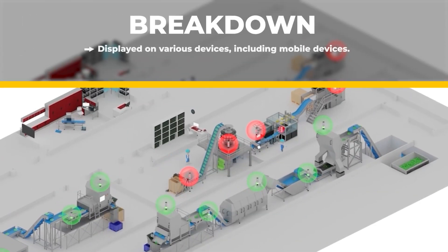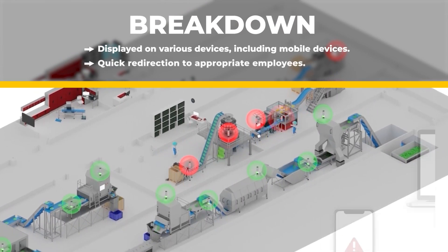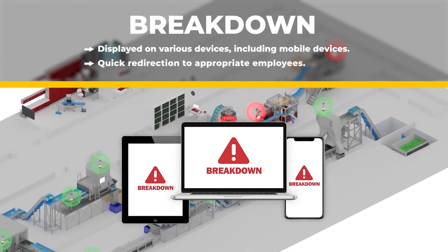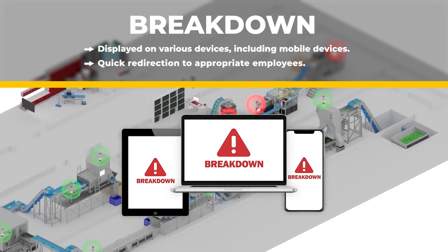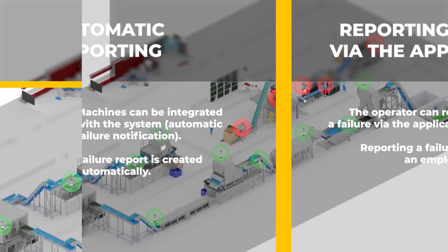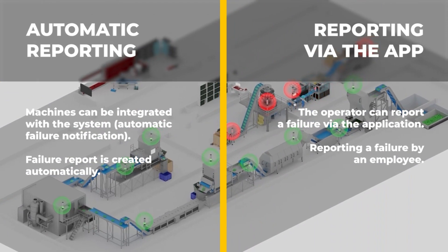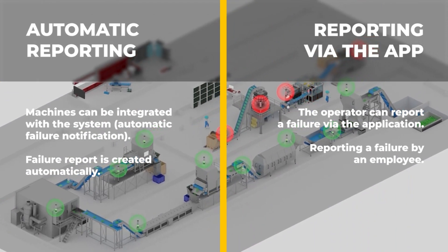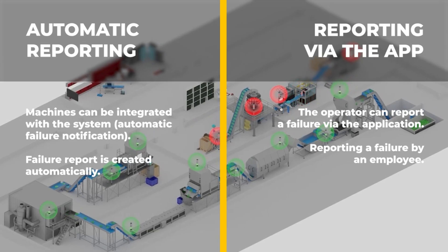A message about the added event will appear in the ZMT, the mobile app, on email, and on dedicated TV screens. Failures can be reported not only via the app — it is possible to integrate machines into our system, which will allow automatic reporting.